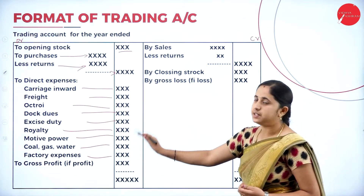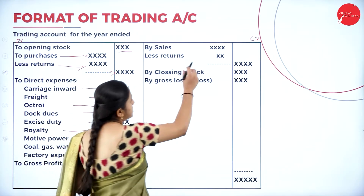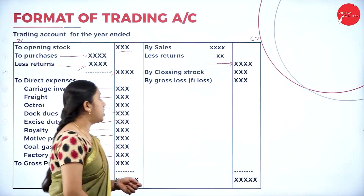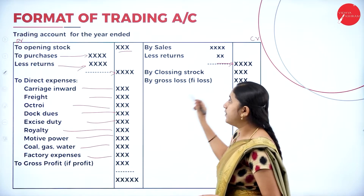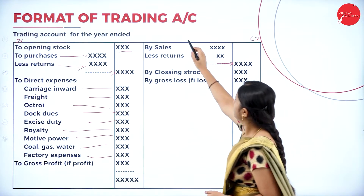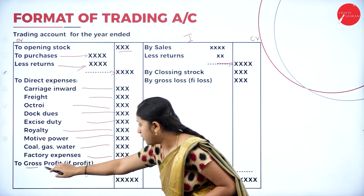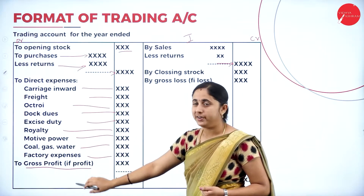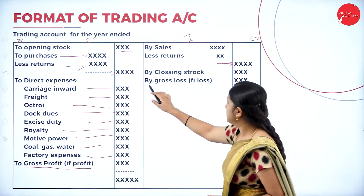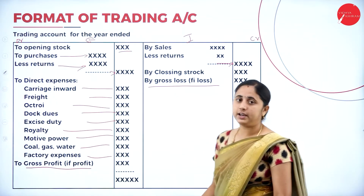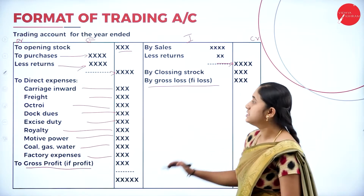After considering all expenses, move to the income side: first consider sales, and if there is any sales return, deduct it from the sales in the outer column. Then add closing stock. After recording all direct income and expenses, make a total and find the difference. If income is more than expenses, it is gross profit. If expenses are more than income, it is gross loss.